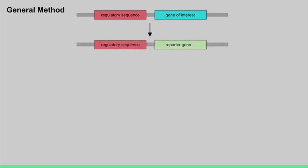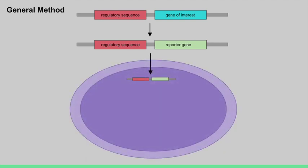Second, you clone this regulatory sequence upstream of a reporter gene in a plasmid. Now this promoter will drive the expression of the reporter. You then transfect the reporter gene construct into the cells of your choice.